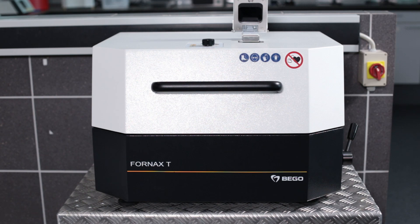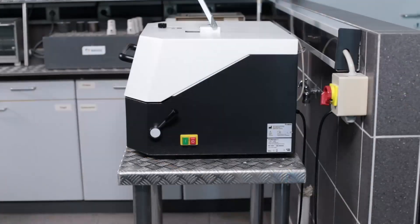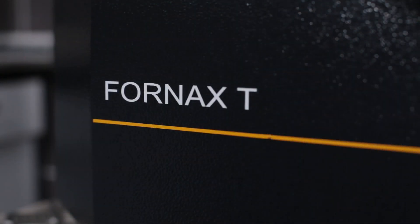The new Fornax T distinguishes itself from other casting devices on the market by a number of special features that make it easier for the dental technician to work. It is equally well suited for precious metal and non-precious alloys up to a casting temperature of approximately 1550 degrees Celsius.